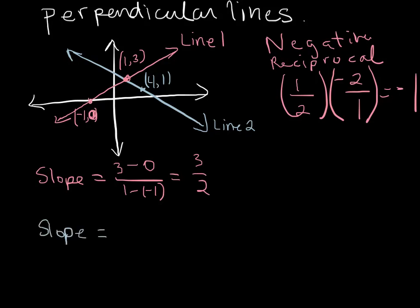And it is going to be 1 minus 3. So they just so happen to actually share this point, so I'm using this point here and this point to figure out that slope. So we've got 1 minus 3 divided by 4 minus 1 and I get negative 2 over 3.